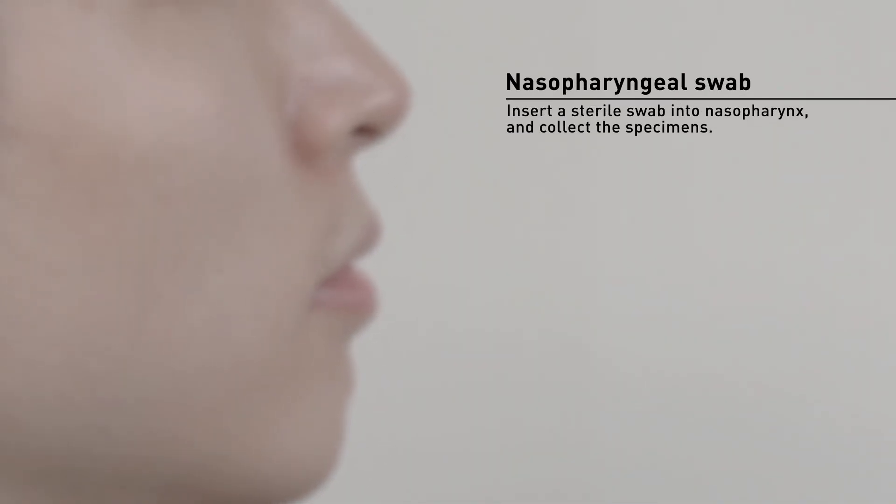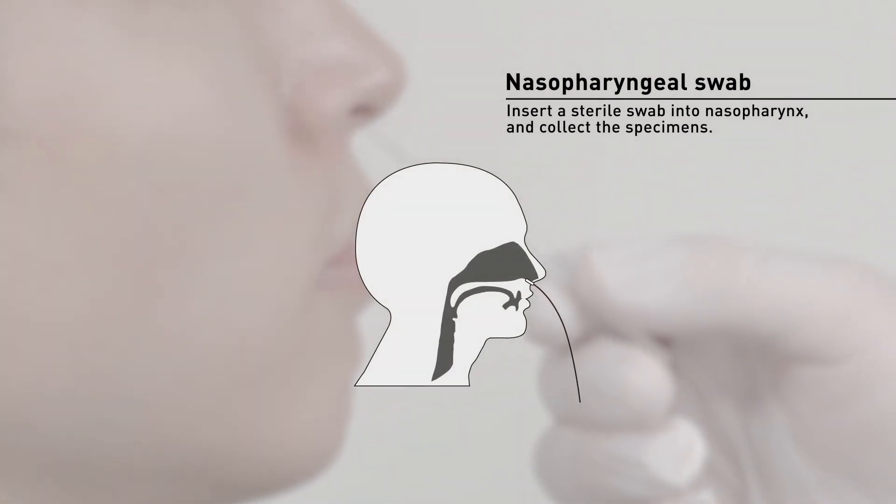Use a disposable swab to collect a nasopharyngeal specimen. Insert the disposable swab into the medial wall of the nasal cavity and swirl gently and deeply to collect a nasopharyngeal swab specimen.